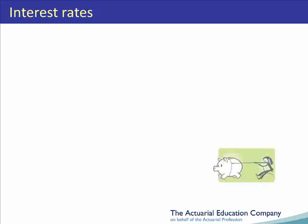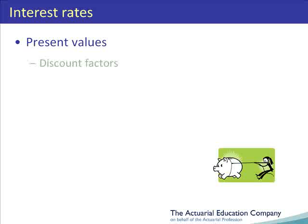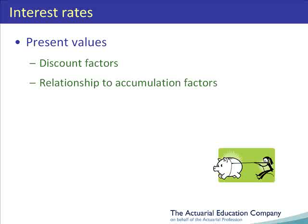In this unit we're going to be studying the present value of cash flows. We will look at how to obtain these using discount factors, and we will see how these discount factors are related to the accumulation factors we met in a previous unit.